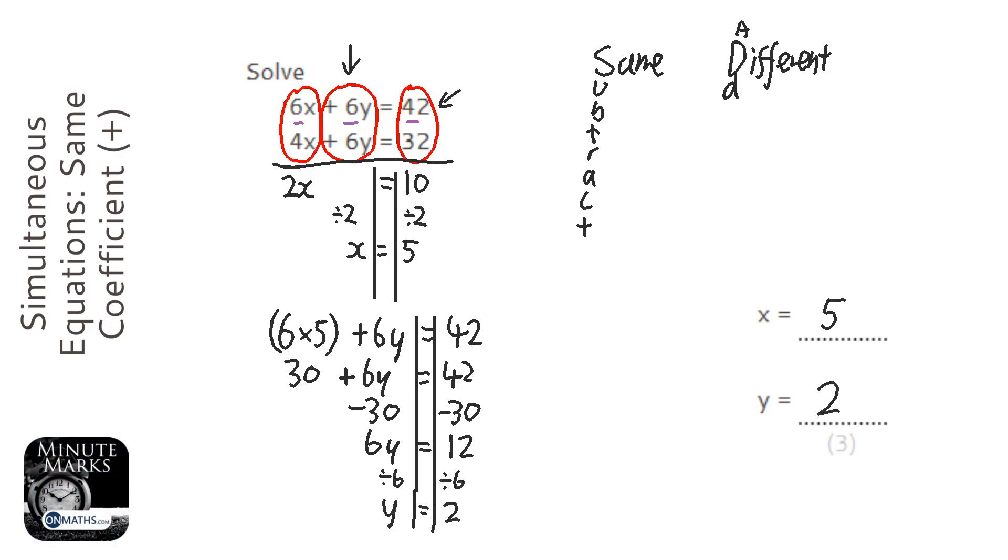So my answers are x equals 5, y equals 2. Now if you've got some time, you can actually put those into the second equation just to check. So 4 times 5 is 20, 6 times 2 is 12, 20 plus 12 is 32, so we know it's the correct answer.